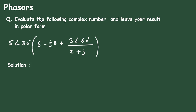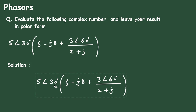In this video we will see an example on phasors. The question asks us to evaluate a complex number and leave the result in polar form. We have to simplify this complex number and get the answer in polar form. Let z be equal to this complex number value.